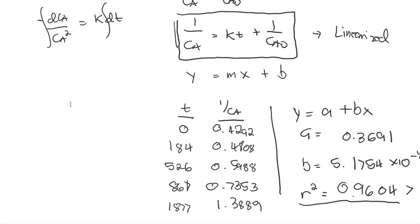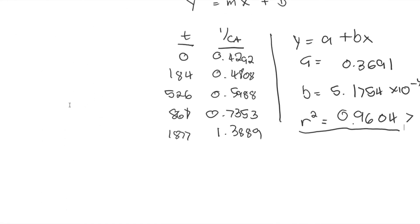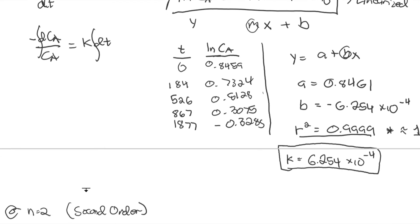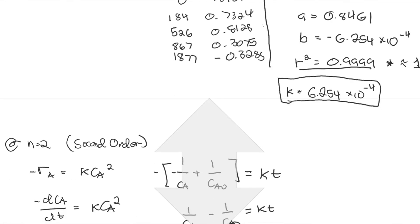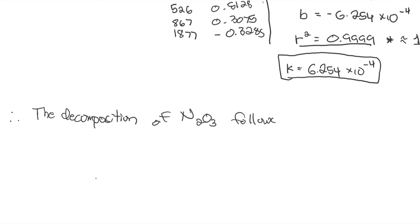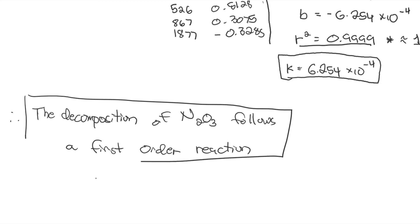The R-squared of 0.9604 for second order is less than the 0.9999 we got for first order. Since first order yielded the highest R-squared value, we conclude that the decomposition of N2O3 follows a first order reaction, with k equal to 6.254 times 10 to the negative 4.